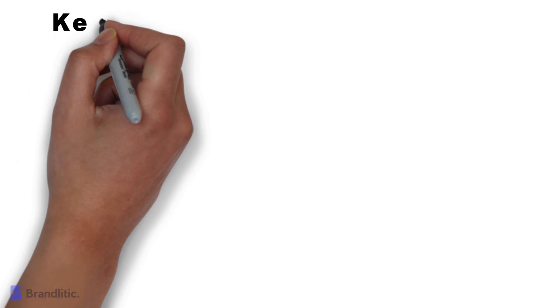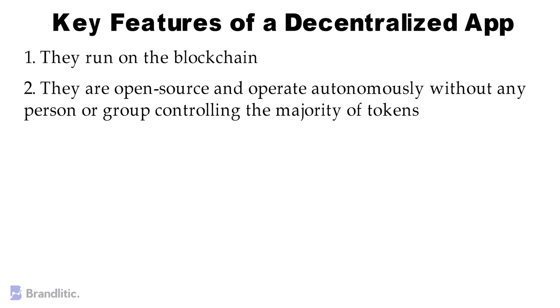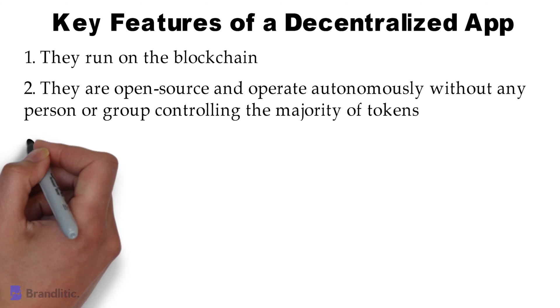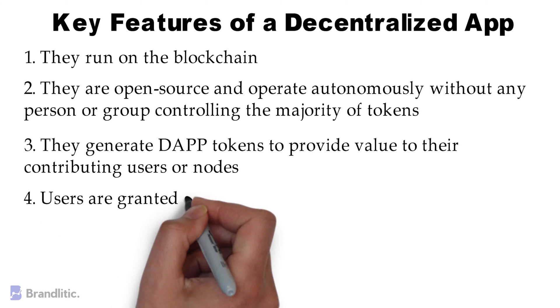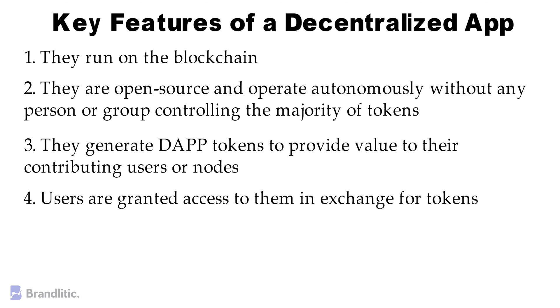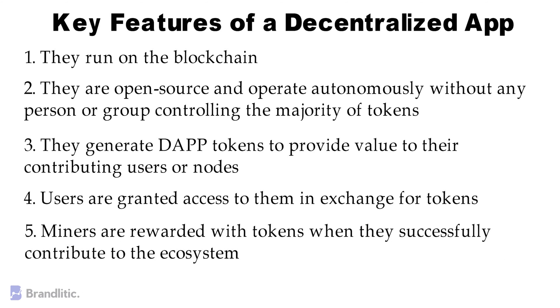There are certain key features of a decentralized app, and any app which satisfies these conditions can be considered a DAP. Number one, they run on blockchain. Number two, they are open source and operate autonomously without any person or group controlling the majority of tokens. Number three, they generate DAP tokens to provide value to their contributing users or nodes. Number four, users are granted access to them in exchange for tokens. Number five, miners or validators are rewarded with tokens when they successfully contribute to the ecosystem.